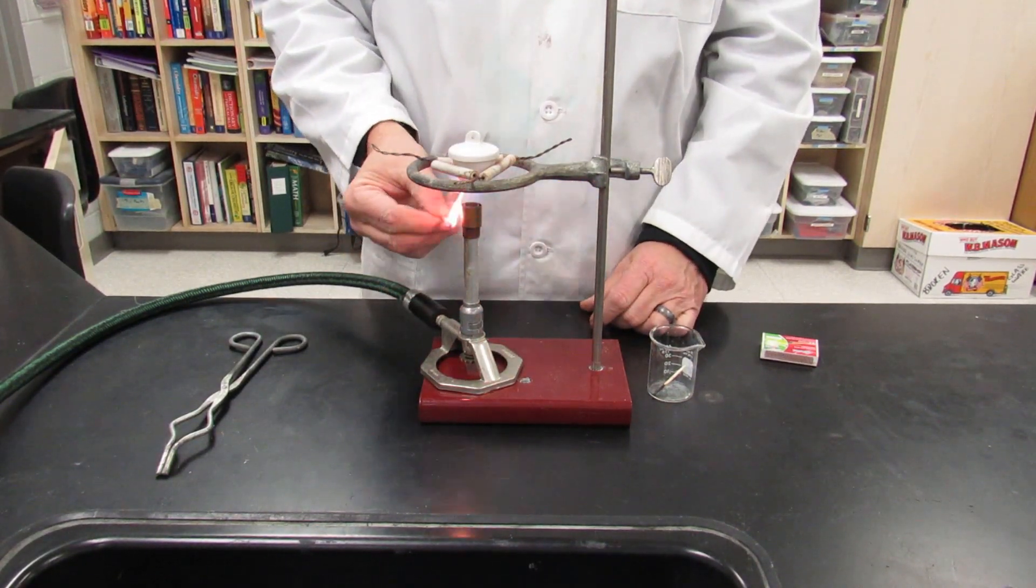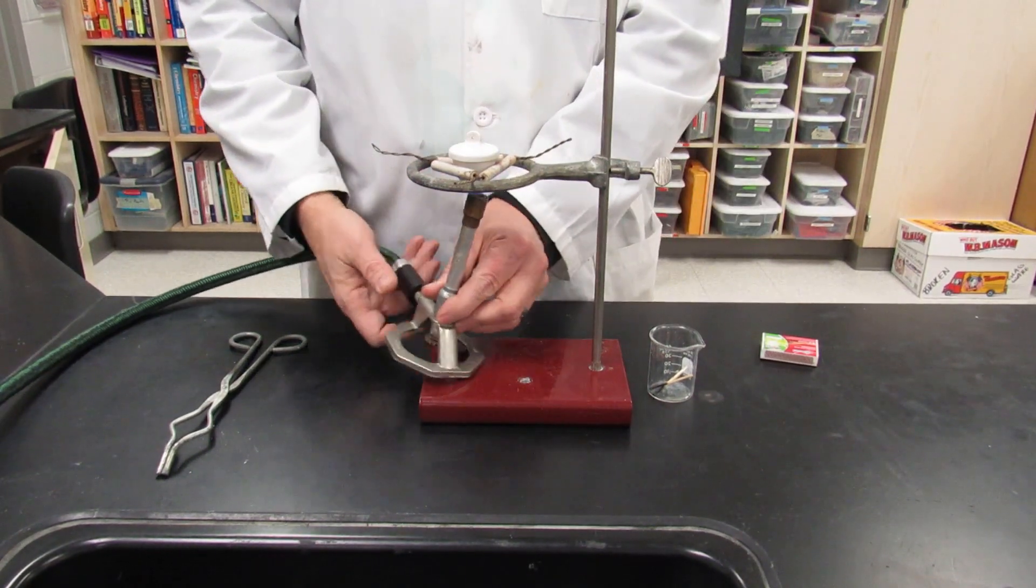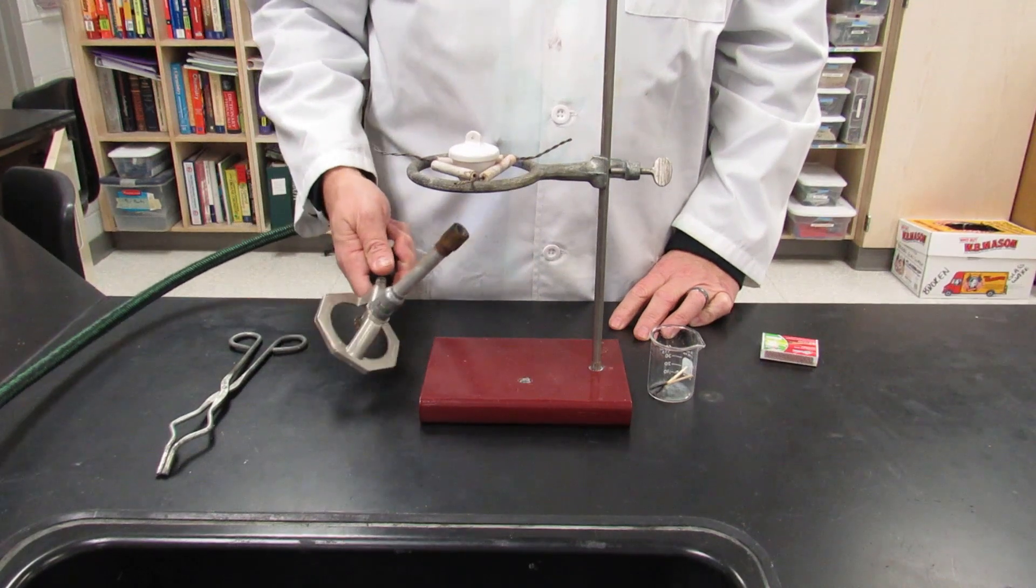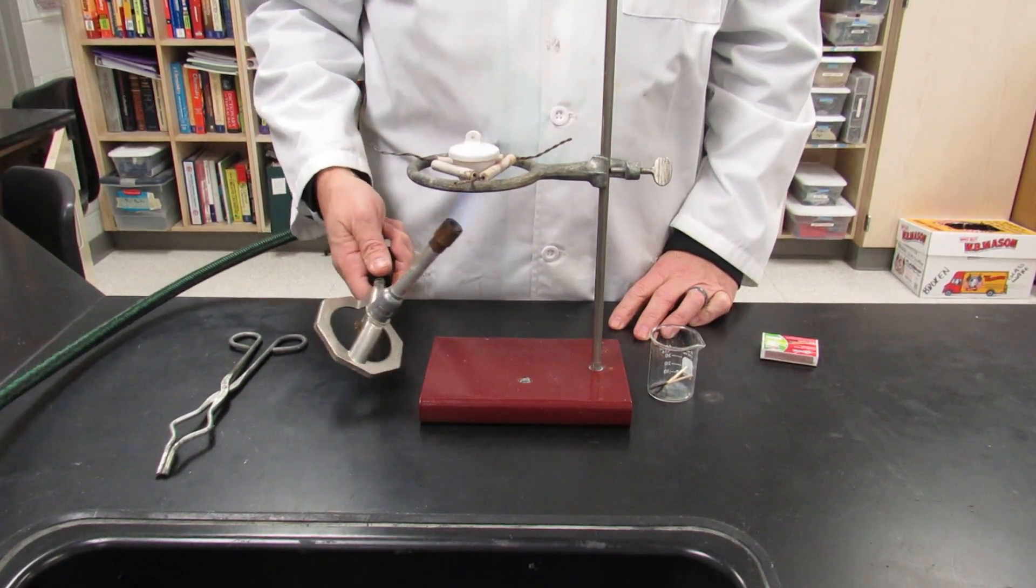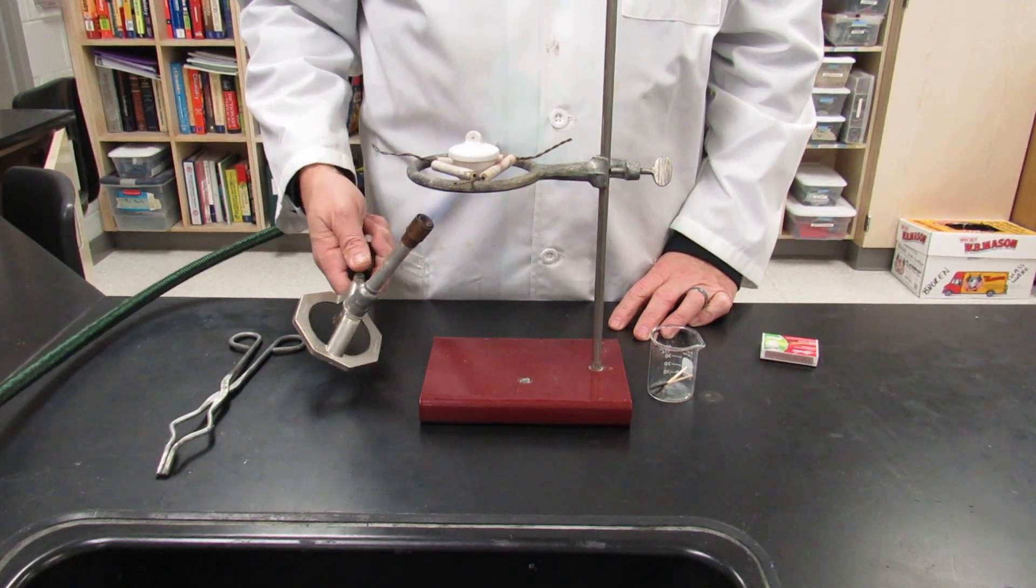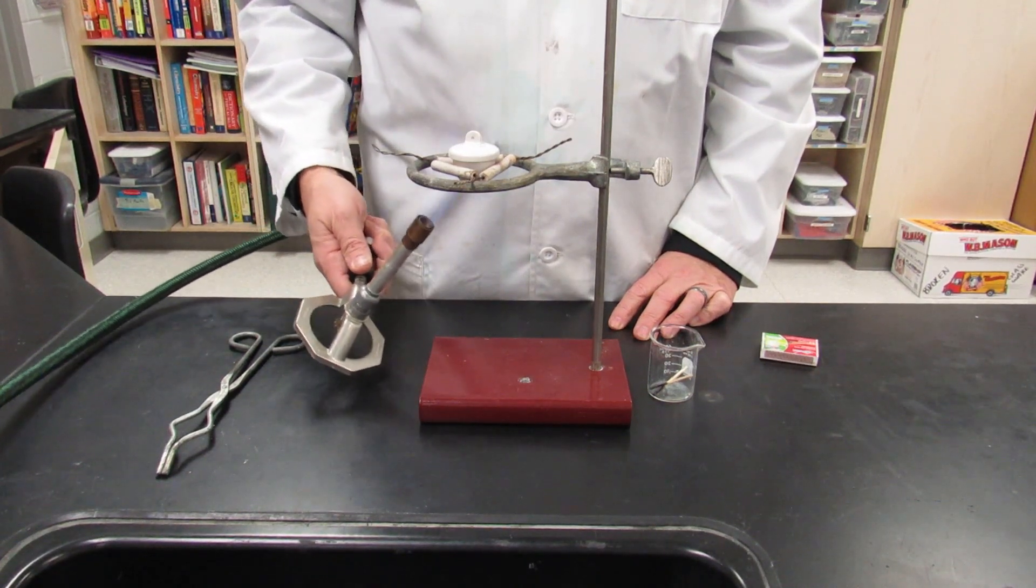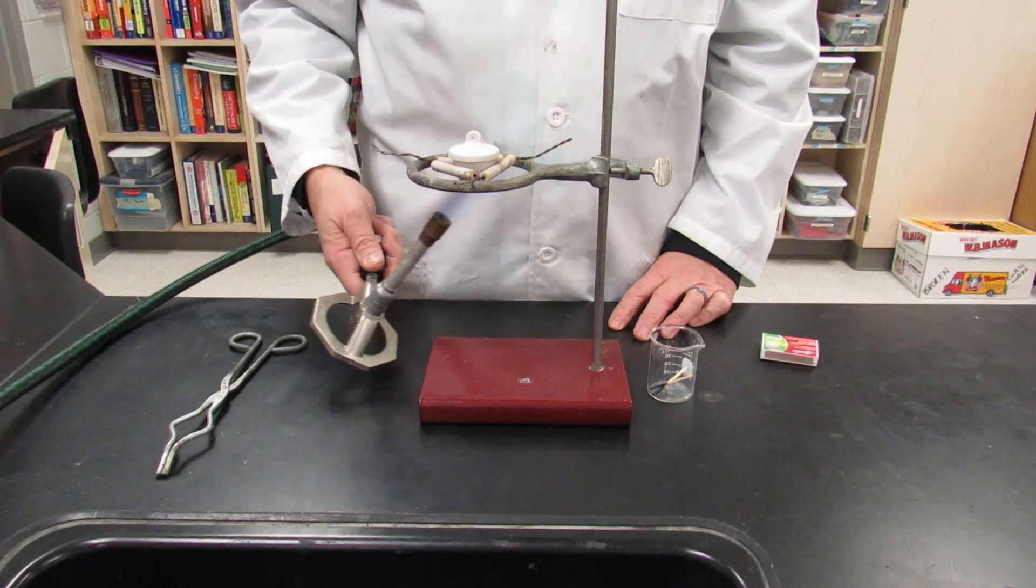And then gently run your flame underneath of your crucible for a couple minutes in order to drive off the water that may be in the crucible. Be patient with this. It does take a little bit of time.